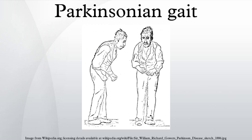Patients with Parkinson's disease exhibit gait characteristics that are markedly different from normal gait. While the list of abnormal gait characteristics discussed below is the most commonly cited, it is certainly not exhaustive.